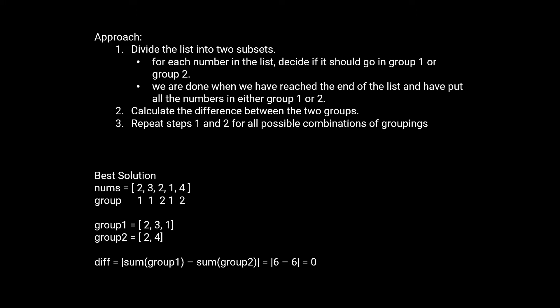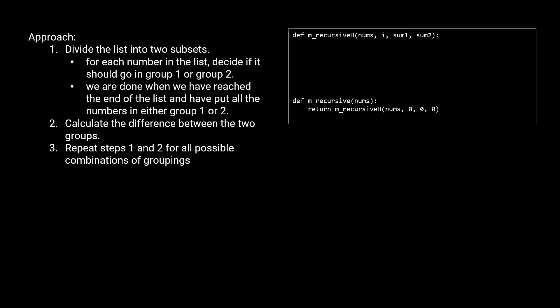Let's try and translate this approach to code. Whenever we hear something like 'all possible ways', 'all possible combinations', or 'all possible permutations', it might be a good idea to consider a recursive solution, because we can make use of the recursive branches to permute all the arrangements. The first solution we're going to explore is in fact a recursive solution. Let's start with our function definitions — we're going to need a helper function to make the recursion work.